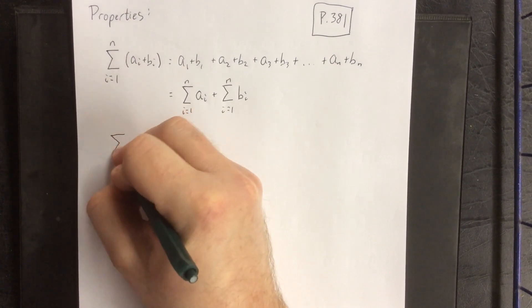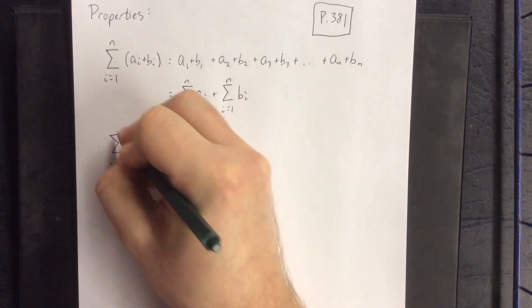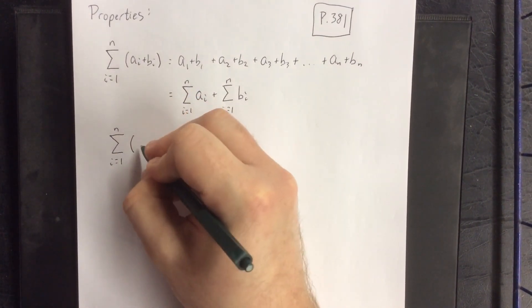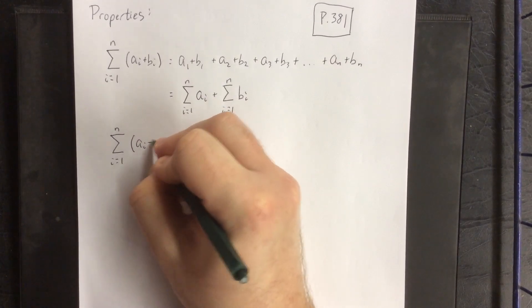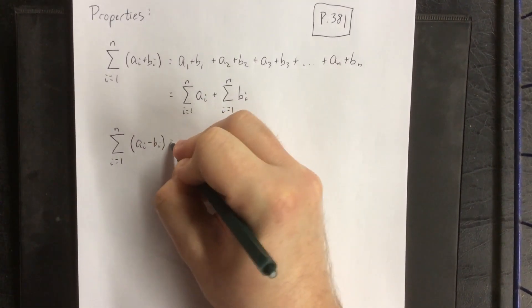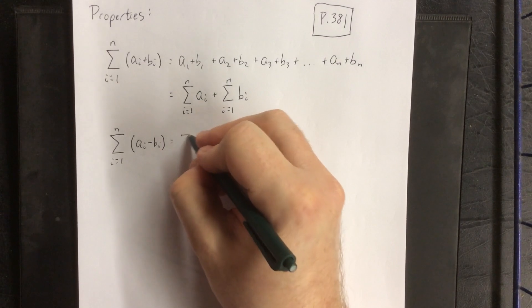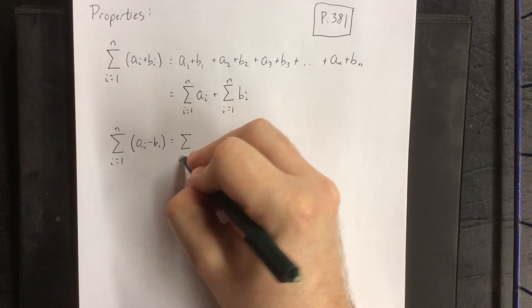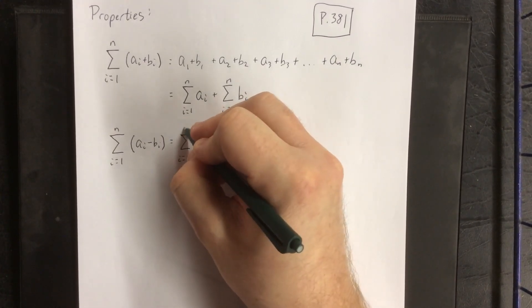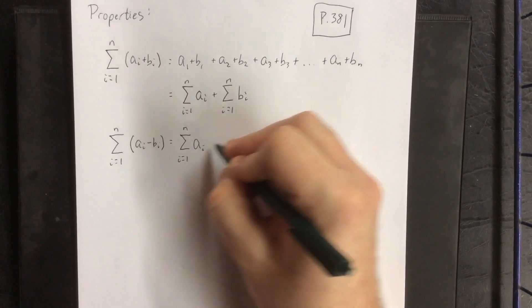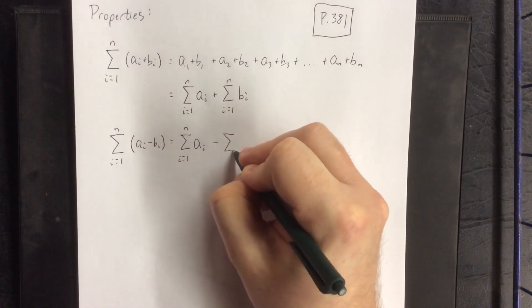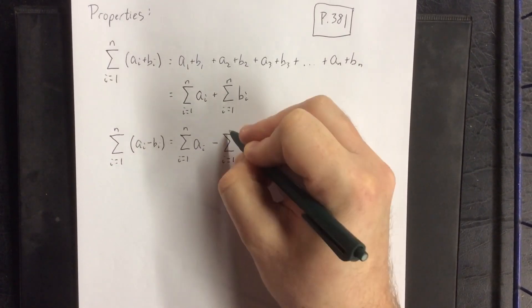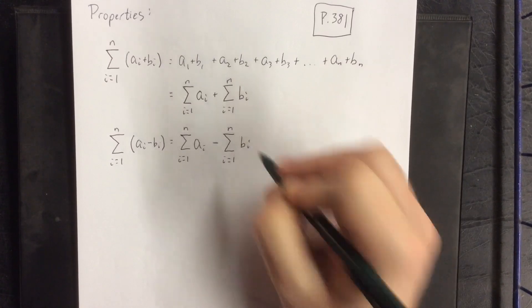Similarly, if I had a difference of multiple terms in here. Using the same logic as what we used above, I can split this up so that all of the a terms are grouped together and then subtract all of the b terms grouped together.